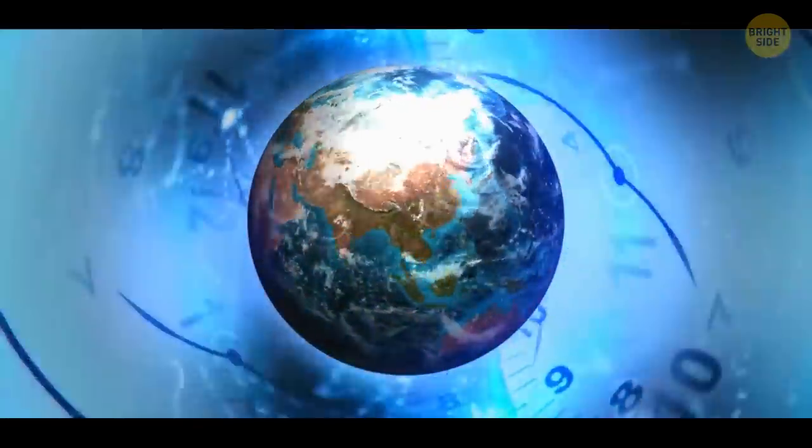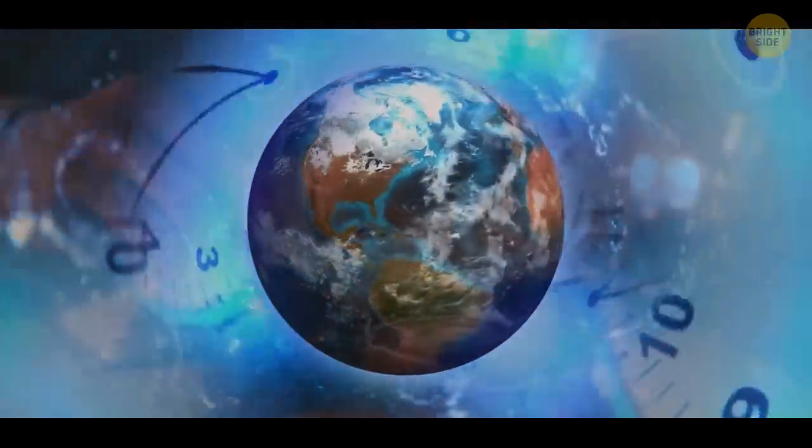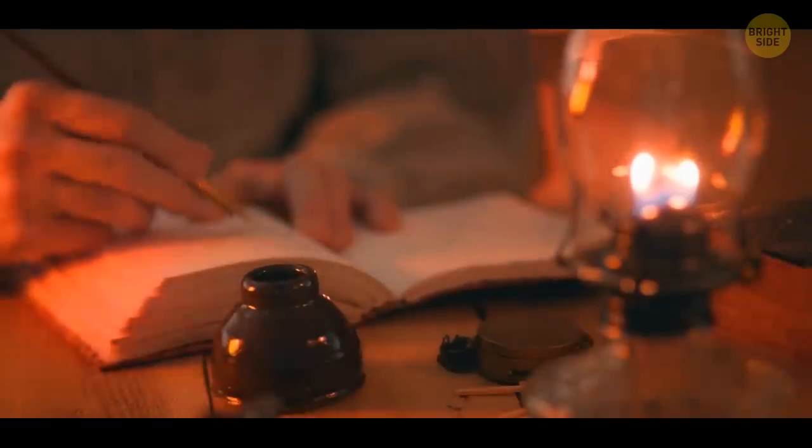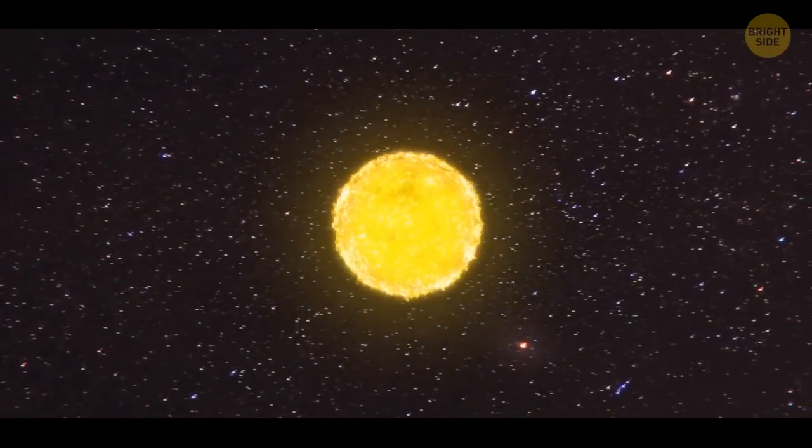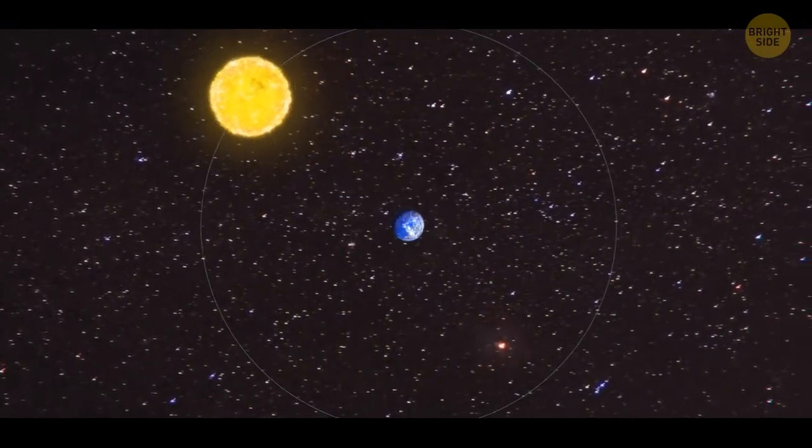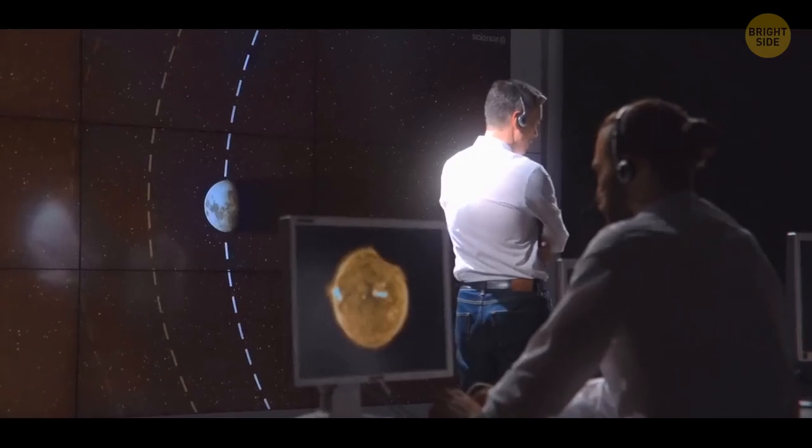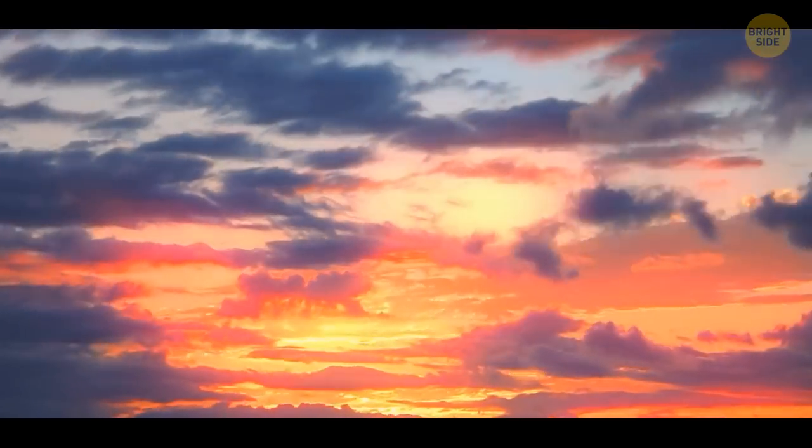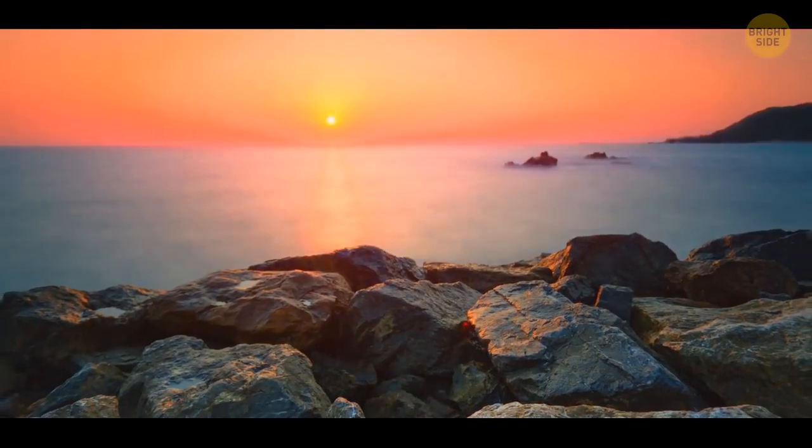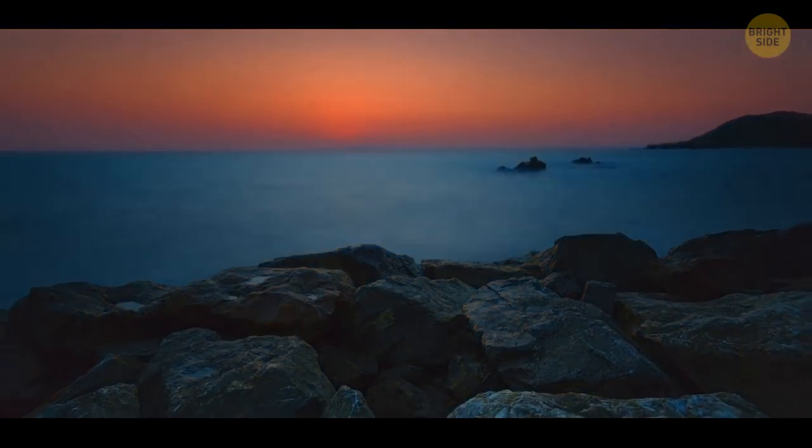Travel back in time a couple hundred years, and you can find even sillier mistakes. Back then, people believed that the Sun revolved around the Earth, and that our planet was the center of the whole universe. That's because they didn't have fancy equipment to measure stuff. People saw the Sun rise in the east and set in the west. That was enough to say that the Sun revolved around us.